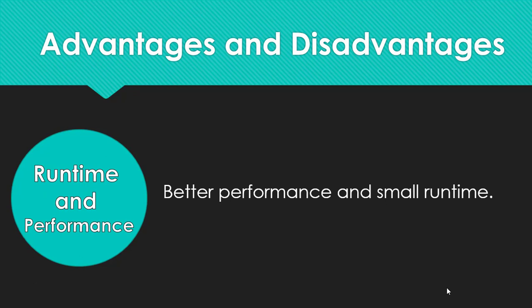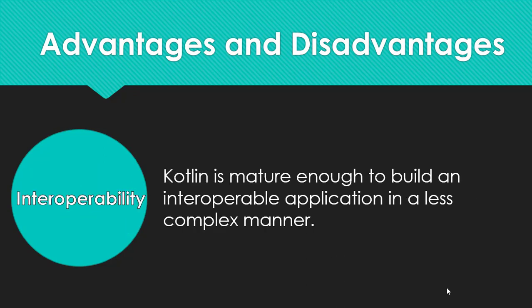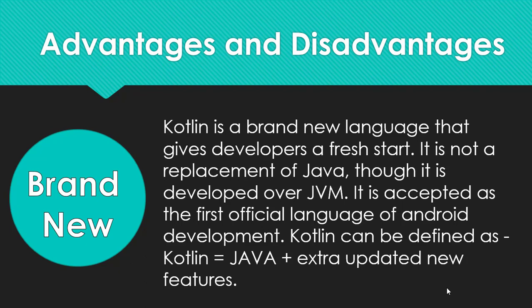The next point is runtime and performance. Kotlin has better performance and small runtime. Interoperability: Kotlin is mature enough to build an interoperable application in a less complex manner. Brand new: Kotlin is a brand new language that gives developers a fresh start. It is not a replacement of Java, though it is developed over JVM.